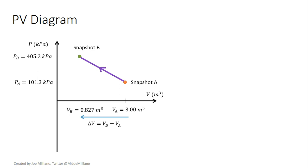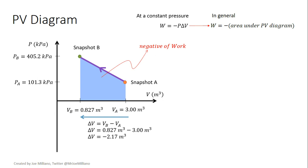We know delta V, change in volume, is equal to VB minus VA. So we can do that calculation and get negative 2.17 meters cubed. Then we need to find, so if we find the area under here, that's going to be the work done on the system. And we know that at a constant pressure, work is just P times delta V, P times negative P times delta V, because if V is getting smaller, then work is positive. So that's why you need the negative there.